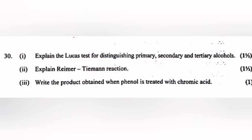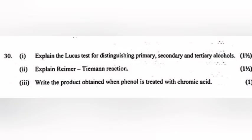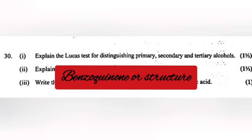Part 2: Explain Reimer-Tiemann reaction. Answer: [answer given]. Part 3: Write the product obtained when phenol is treated with chromic acid. Answer: Benzoquinone or structure.